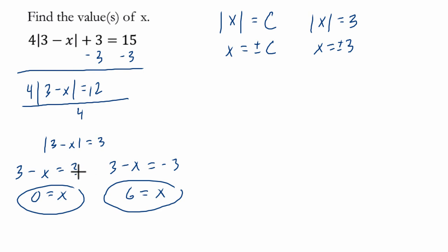If you plug them in, you can see this is true. If x is 6 or x is 0, the absolute value would be 3. Because 3 minus 0 is 3 and the absolute value of 3 is 3.